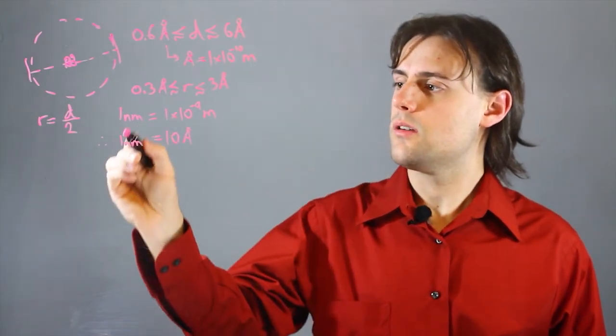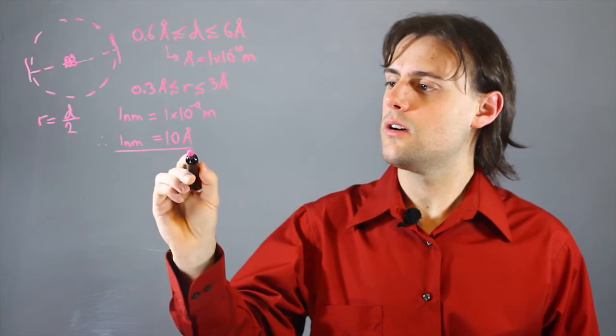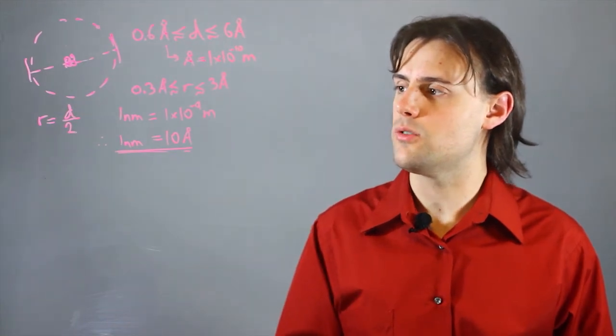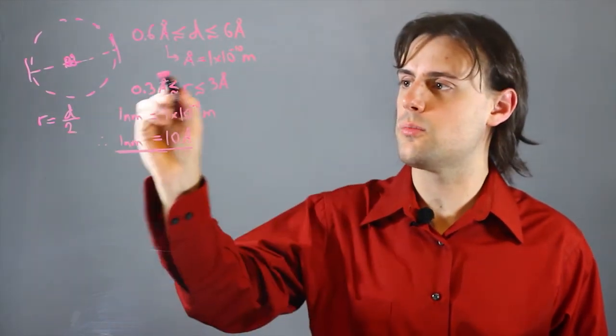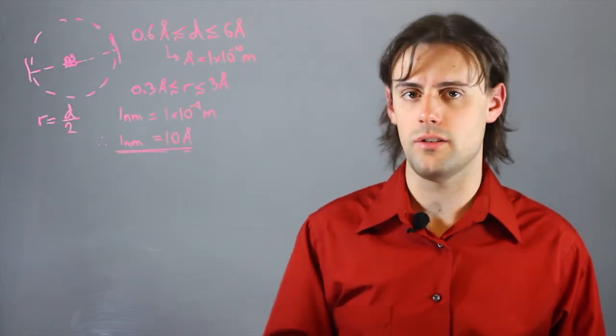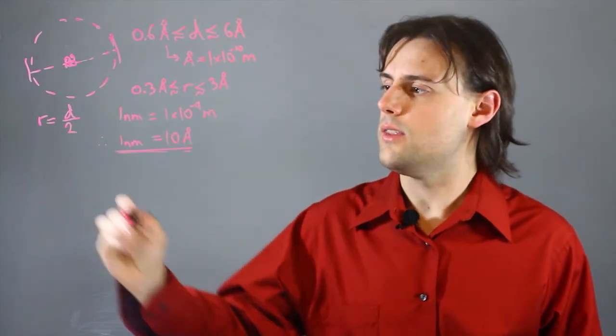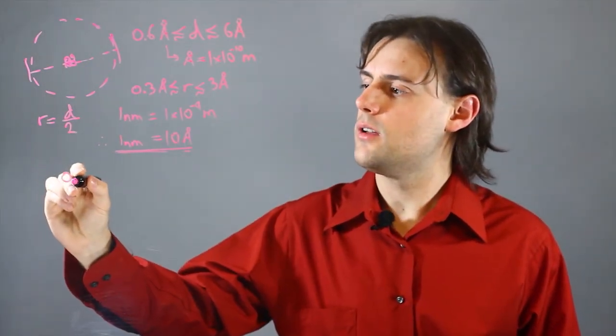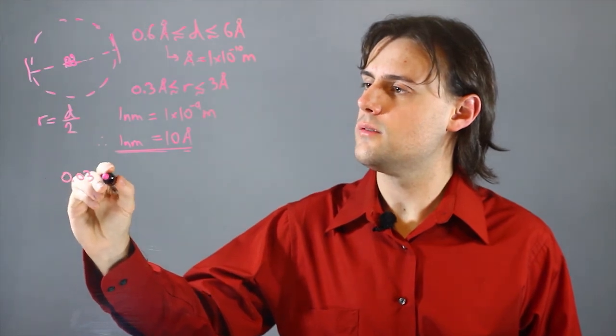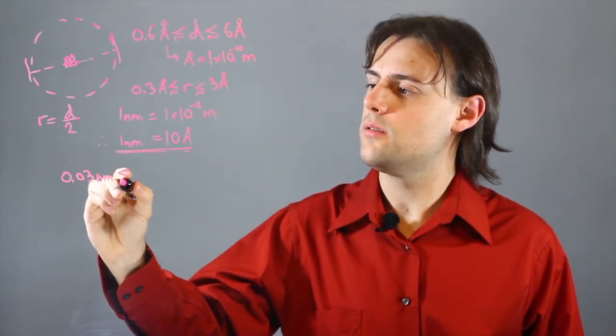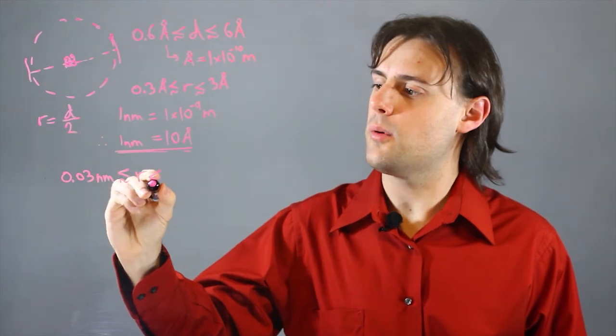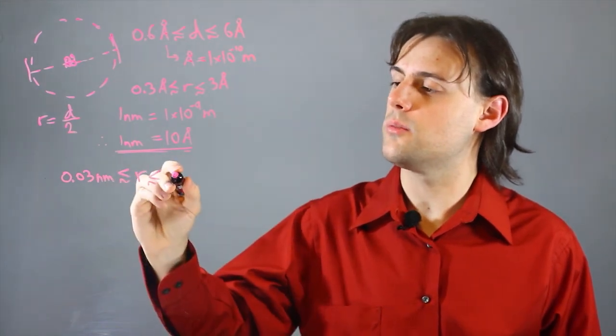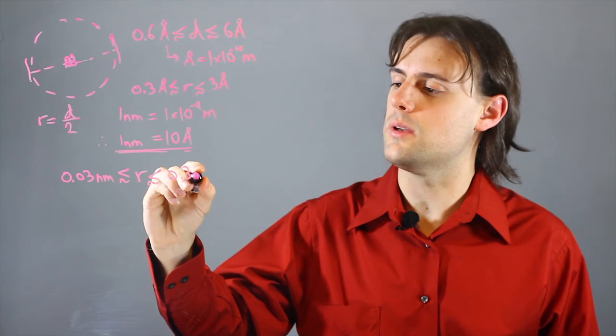We can use this conversion, this relationship between nanometers and angstroms, to re-express this bound on the size of atoms. This simply becomes 0.03 nanometers for the lower bound, and for the upper bound on the radius, it would be approximately 0.3 nanometers.